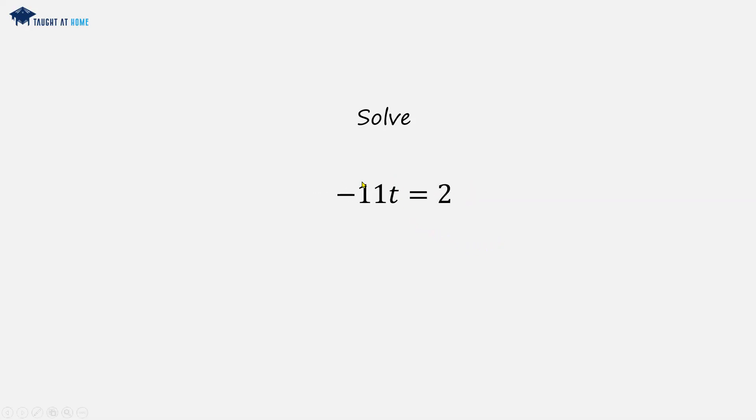Finally, we've got minus 11t on the left hand side, so we can divide both sides by minus 11. These cancel out, leaving us with t equals 2 over minus 11. Written conventionally, t equals minus 2 over 11. That is the solution.